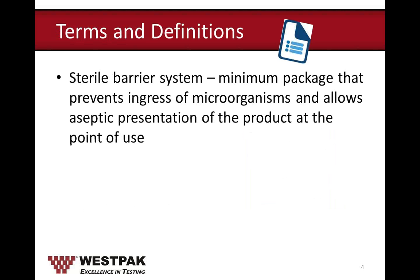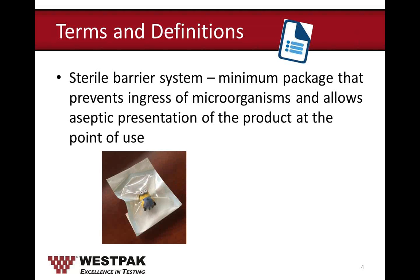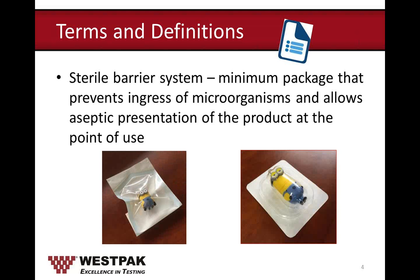Let's go over the basic terms and definitions. The sterile barrier system, or SBS, is a minimum package that prevents ingress of microorganisms and allows aseptic presentation of the product at the point of use. For example, here's Minion Dave placed in a plastic film Tyvek pouch. And here's Minion Tim in a thermoform tray with a Tyvek lid. These Minions are my star role models for many presentations because a lot of the products we test at Westpac are confidential — so pictures are worth a thousand words.